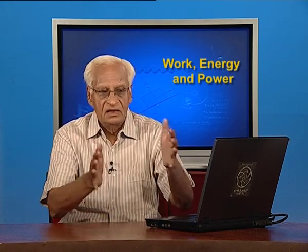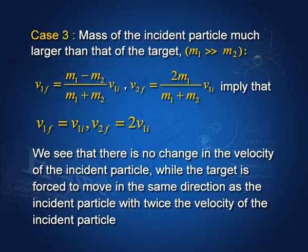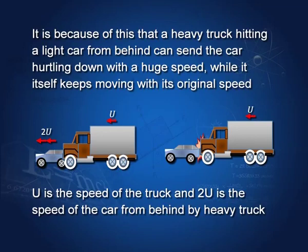Case 3: a very heavy particle collides with a very light particle. Here v₁f equals v₁ᵢ — the incident particle's velocity remains intact. The velocity of the target particle equals twice the velocity of the incident particle. A truck hitting a stationary car from behind: the truck keeps moving with the same velocity u, while the car now moves with velocity 2u. This means the car suffers a great deal of damage when a truck hits it from behind.